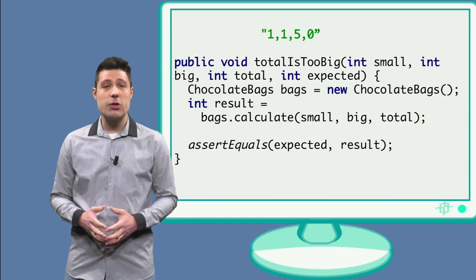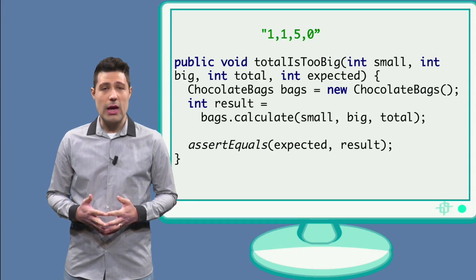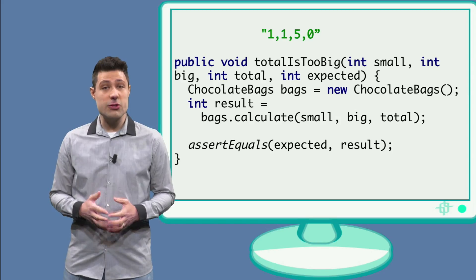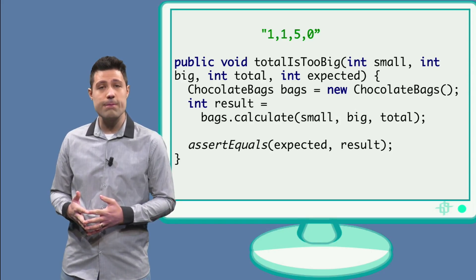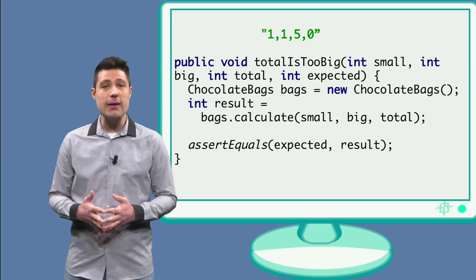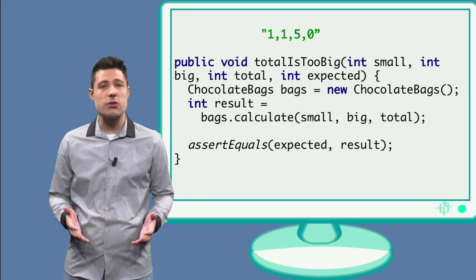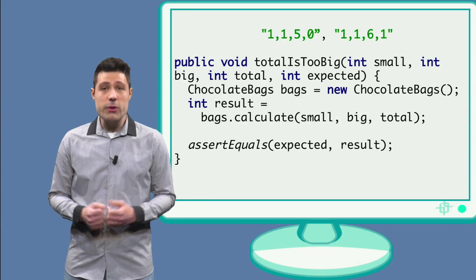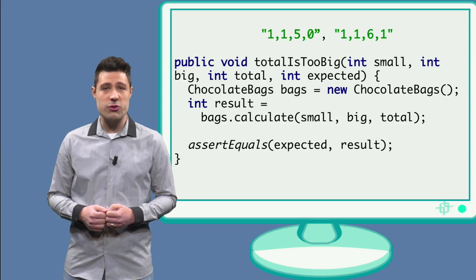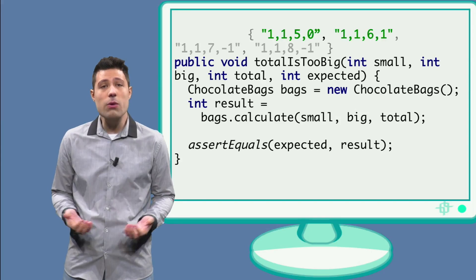Next, we should pass the concrete values we expect JUnit to use when running the test. And we do this by means of strings. For example, the first test would be small equals 1, big equals 1, total equals 5 and expected equals 0. We separate these values with commas. We do the same for the next, small equals 1, big equals 1, total equals 6 and expected equals 1. And all of them.